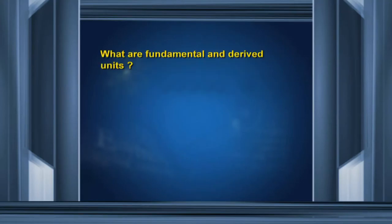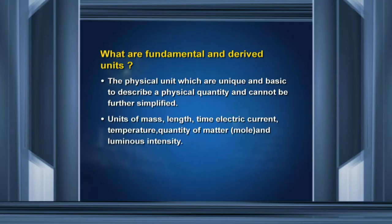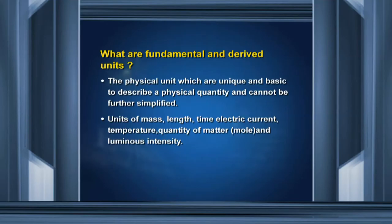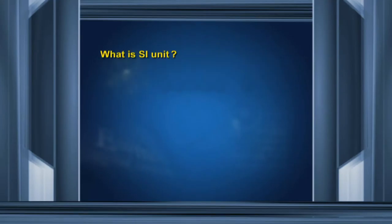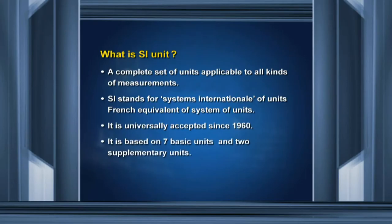What are fundamental and derived units? Fundamental units are the physical units which are unique and basic to describe a physical quantity and cannot be further simplified. Units of mass, length, time, electric current, temperature, quantity of matter (the mole), and luminous intensity are fundamental units. Derived units are units of all other physical quantities expressed in terms of basic units — for example, unit of area, unit of force, unit of impulse, etc. The SI unit is a complete set of units applicable to all kinds of measurements. SI stands for Système International, which is the French equivalent of 'system of units'. It is universally accepted since 1960 and is based on seven basic units and two supplementary units.